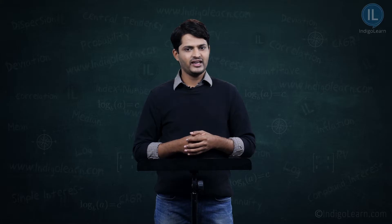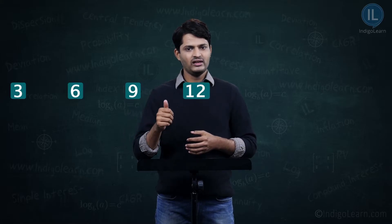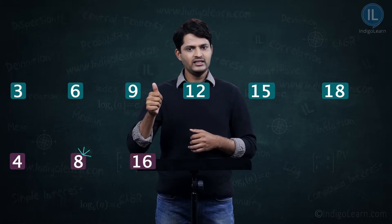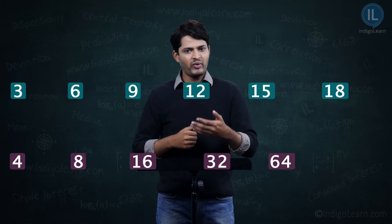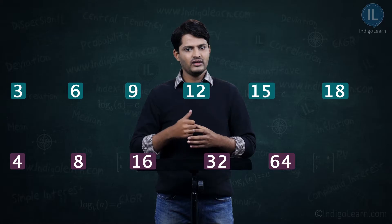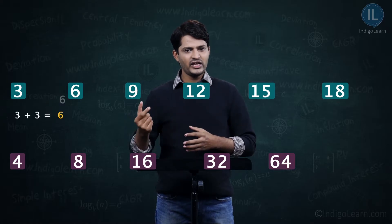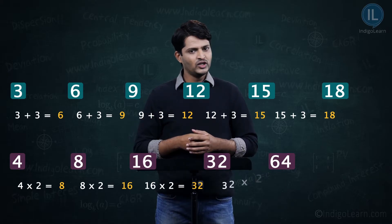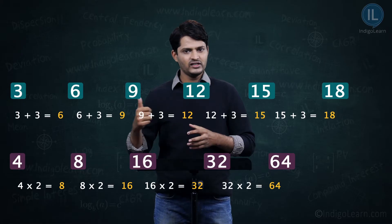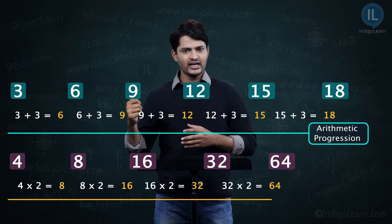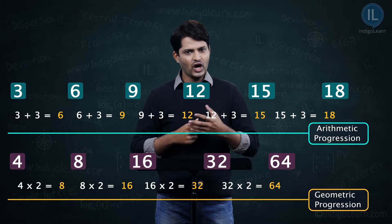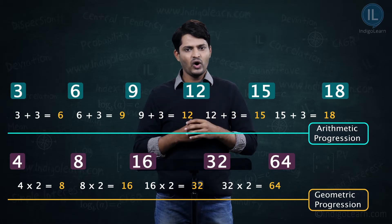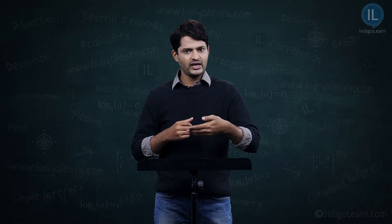Let's look at two more patterns: 3, 6, 9, 12, 15, 18, and so on — where every number differs by 3; and 4, 8, 16, 32, 64, and so on — where every number is double the previous. The first kind of pattern is called arithmetic progression, and the second kind is called geometric progression. Next, we will learn how to identify each type and how to determine the nth term or sum to n terms in each progression.